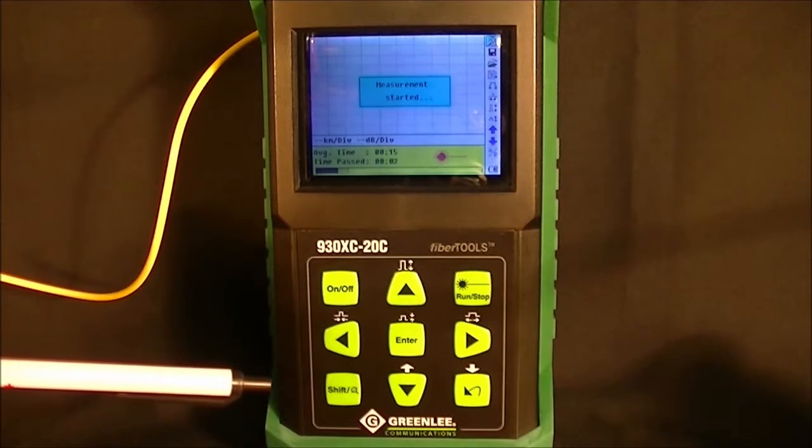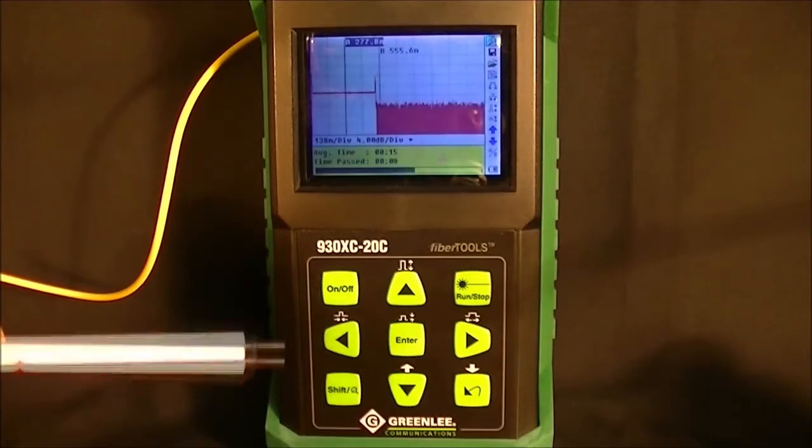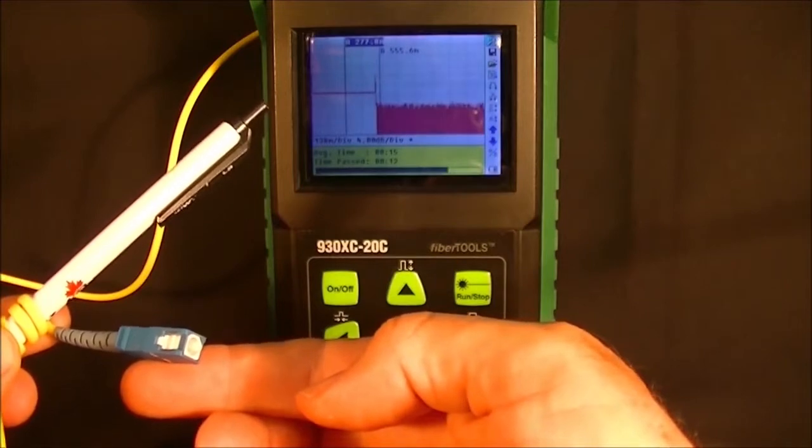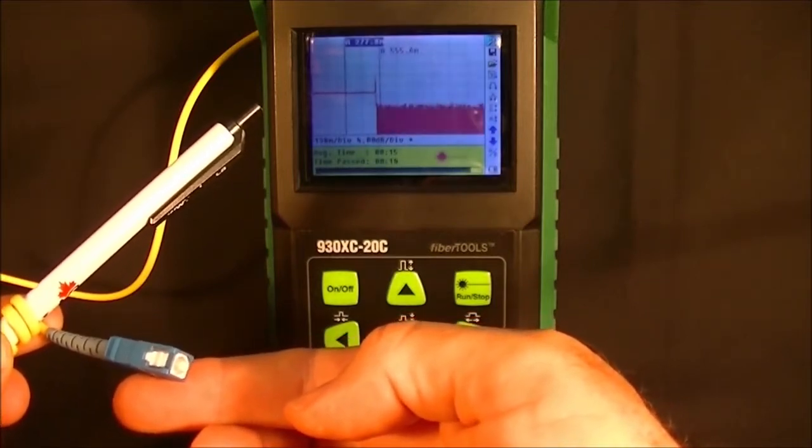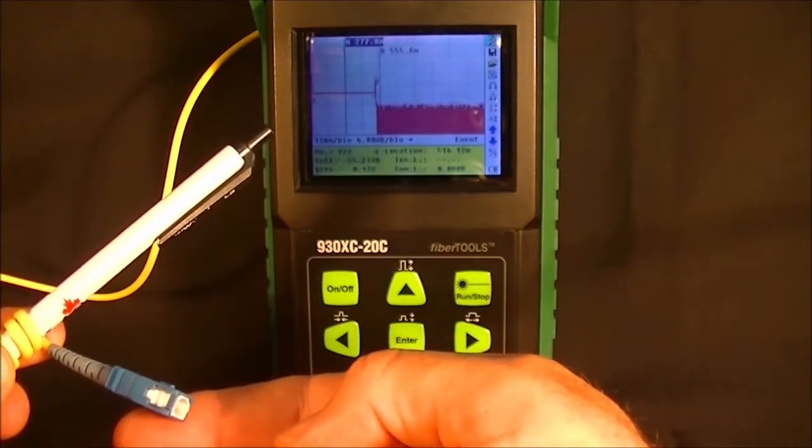Again that's 15 seconds and you can see that the ghost is now removed. That's because the end of the fiber here is a flat reflection which is very strong reflection and it will cause the detector to saturate.